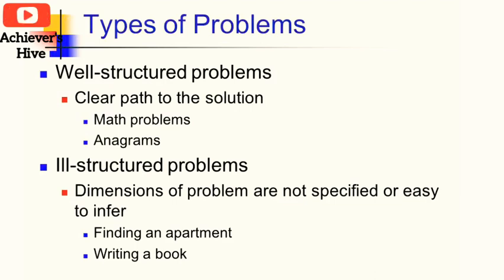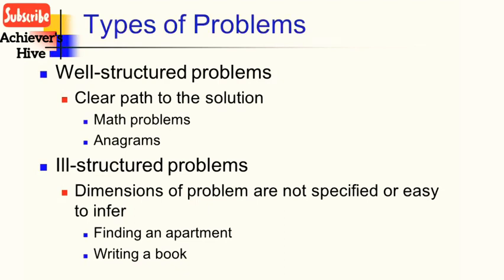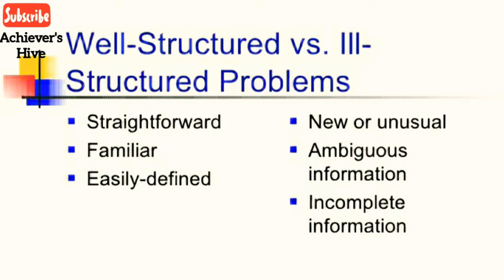Ill-structured problems include finding an apartment, writing a book, or getting proficiency in a particular subject — in which you have to think about where to start and how to start the whole process. In a well-defined problem, both the nature of the problem and the information needed to solve it are available and clear, so one can make straightforward judgments about whether a potential solution is appropriate. Within ill-defined problems, such as how to bring peace or how to write a book, not only may the specific nature of the problem be unclear, but the information required to solve it may be even less obvious.